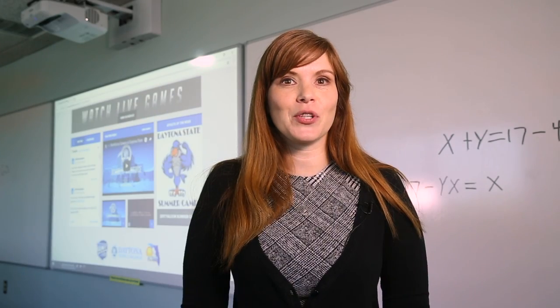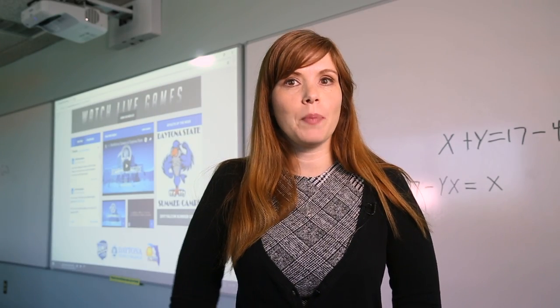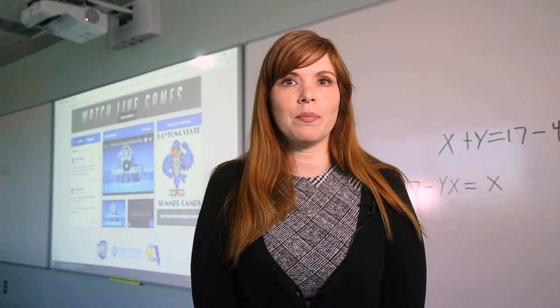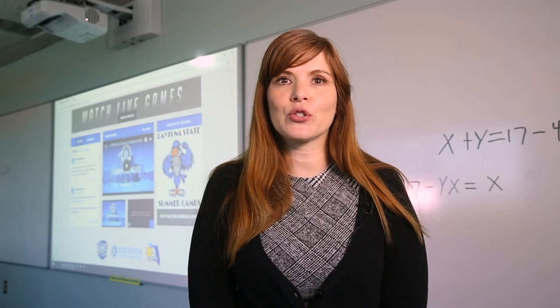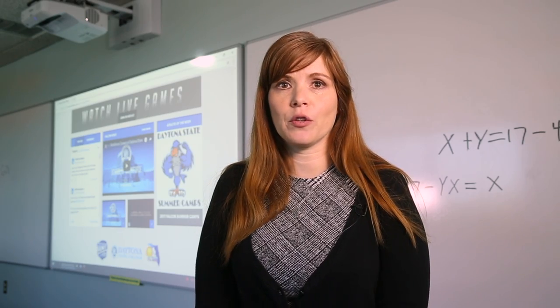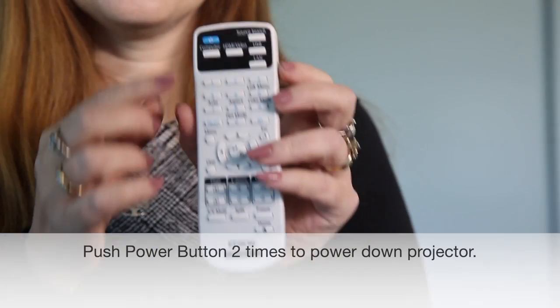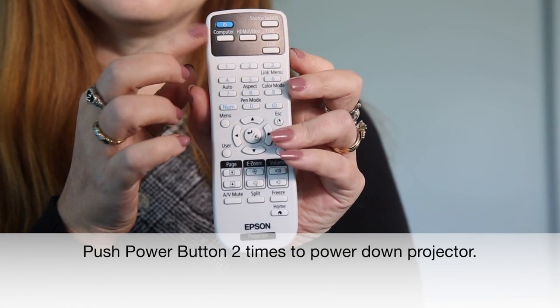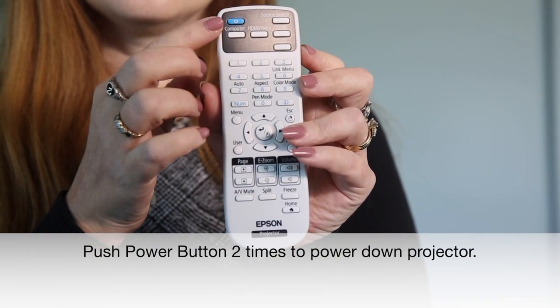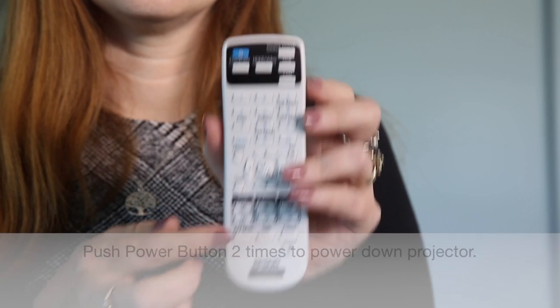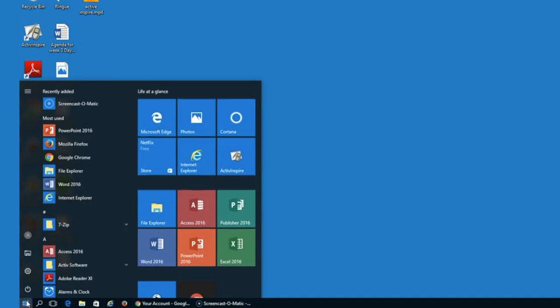At the end of your class, you should power down the equipment. First, turn off the projector by clicking the power button two times. Next, shut down the computer by going to the Windows Start icon and clicking Shut Down.